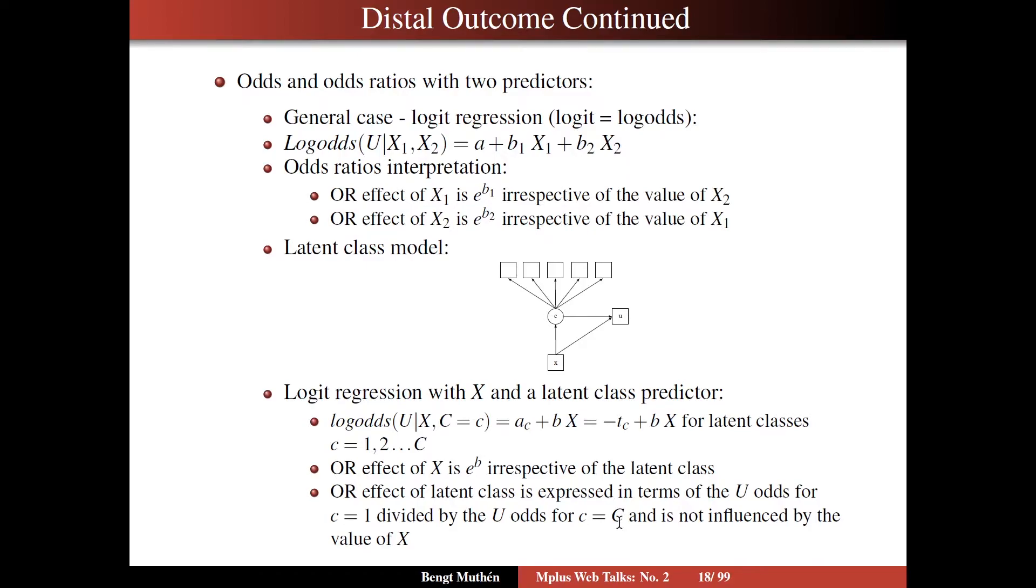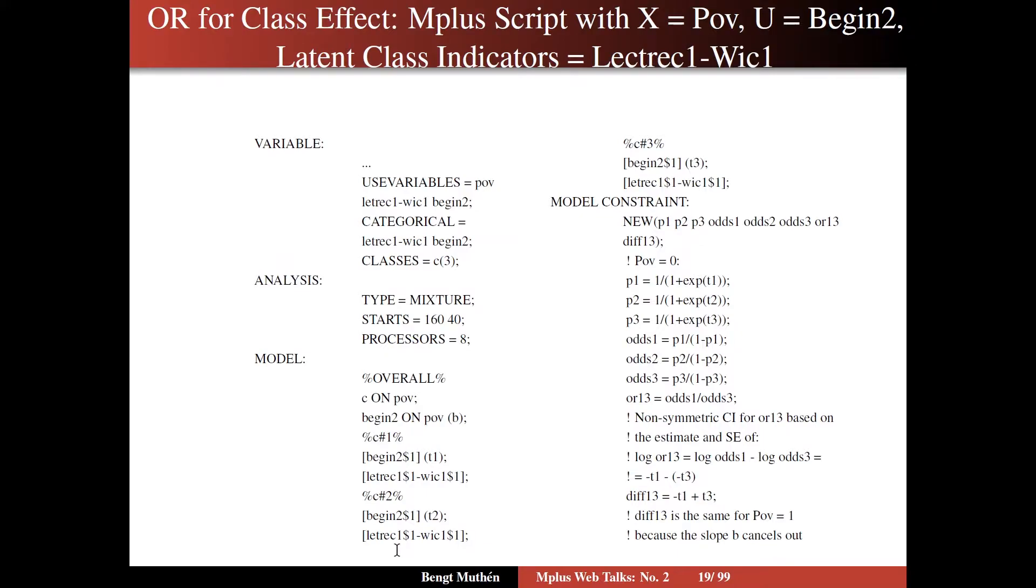Just like we have talked about before, using the last class as a reference class. And again, it's not influenced by the value of X. On slide 19, how would you express this in Mplus? Let's look at that odds ratio effect for the latent class, that is the latent class effect on the distal outcome U.